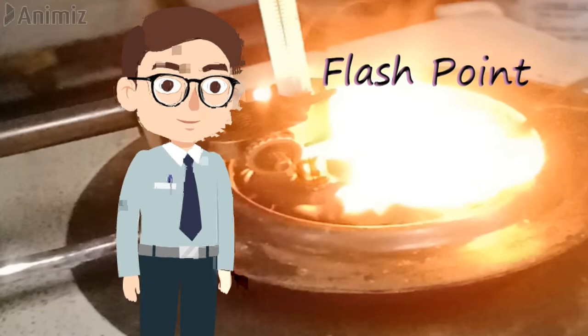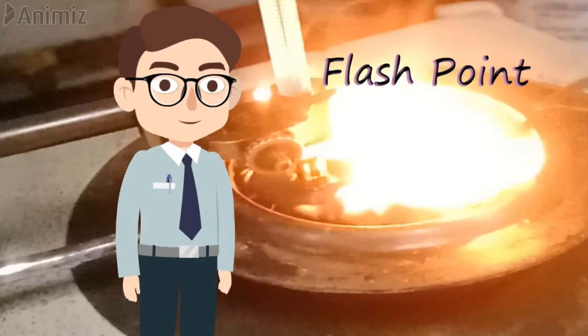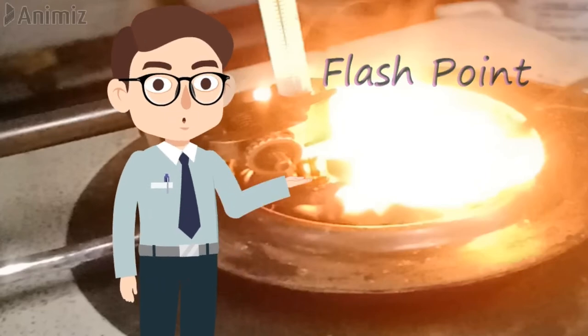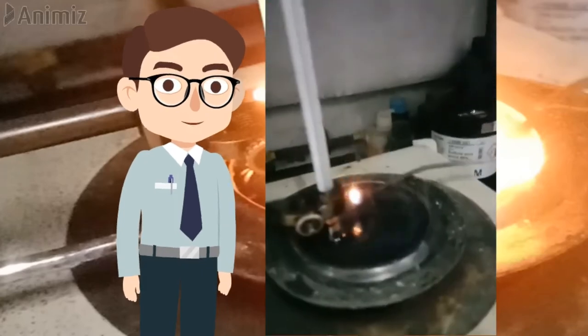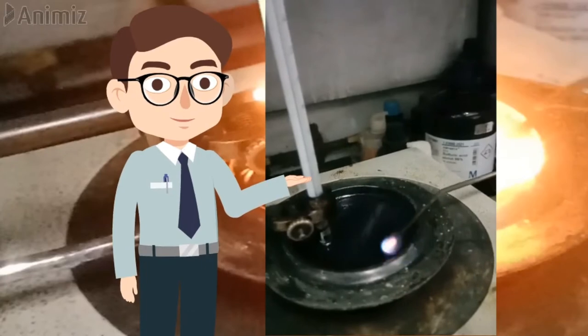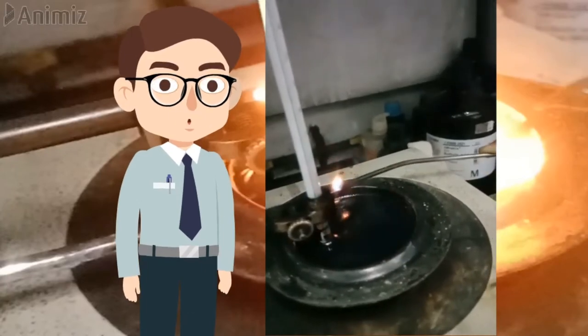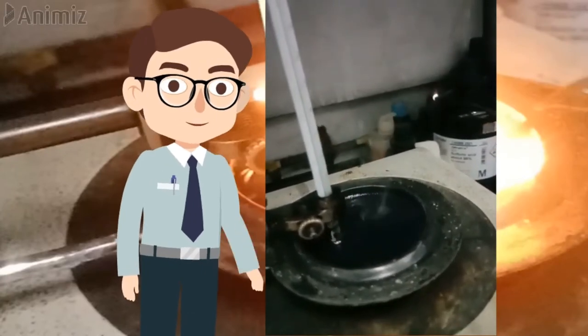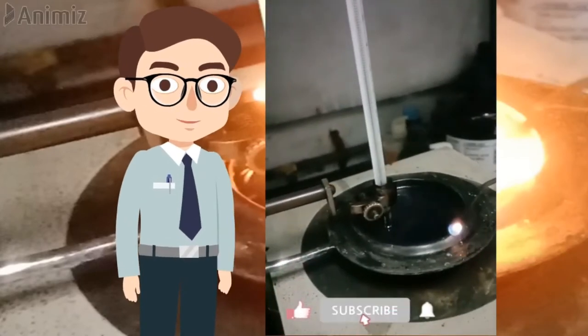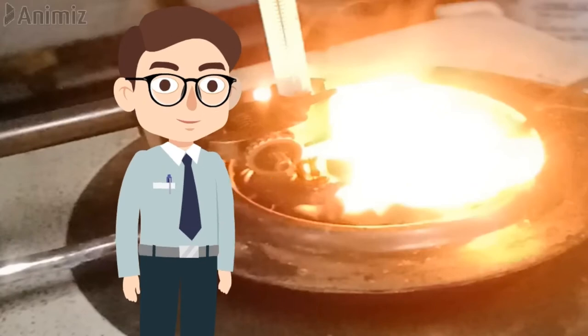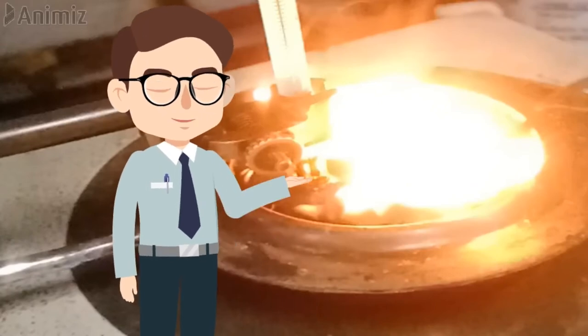It means whenever the petroleum products are heated, the vapor is produced at the surface of the liquid and if flame is applied on the surface, it catches fire. So, the phenomenon of catching fire at minimum temperature is the flash point.